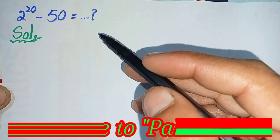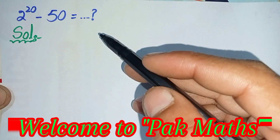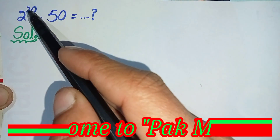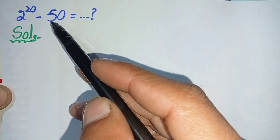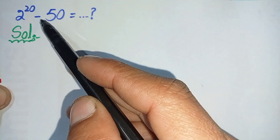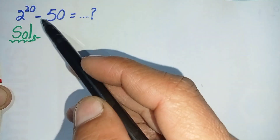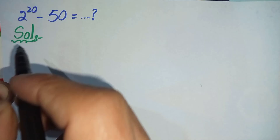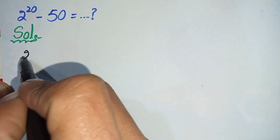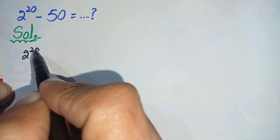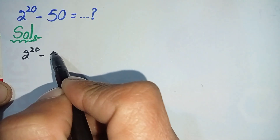Hello everyone, welcome to Parkmas. In this video I am going to evaluate the value of 2 raised to the power 20 minus 50. To solve this question properly and step by step, first we will write the solution and then we will rewrite the question and try to solve it. So the question is 2 raised to power 20 minus 50.